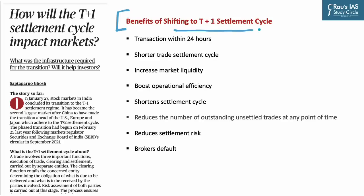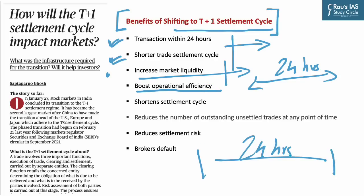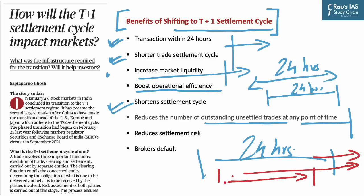The benefits of the T+1 settlement cycle include quicker transactions within 24 hours, a shorter trade settlement cycle, and increased market liquidity since money can be transferred within the same day. It also boosts operational efficiency as more transactions take place within 24 hours, reduces the number of outstanding unsettled trades at any point of time, decreases settlement risk, and addresses the issue of broker defaults.